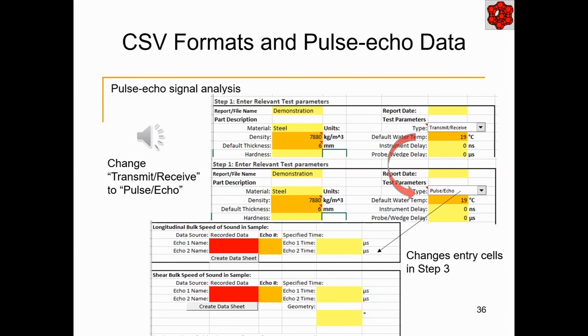Next, we consider pulse echo signals. When using pulse echo data after recording the relevant instrument parameters, we must switch the type entry from transmit receive to pulse echo. Although there is an entry cell for the temperature, the water temperature will not be used when using two multiples of a pulse echo setup. When pulse echo is selected in step 1 section, the data entry option changes in the step 3 section. Now we see that there are two red cells in each of the longitudinal and bulk speed categories.